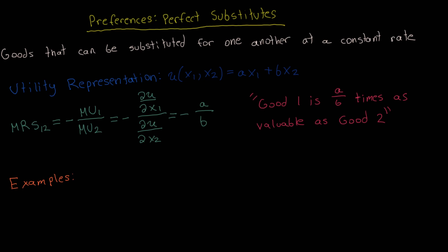One nice interpretation of this constant marginal rate of substitution is that good 1 is a over b times as valuable as good 2. That's one way you can think about interpreting these parameters a and b, and this will be more clear as I go over some examples.